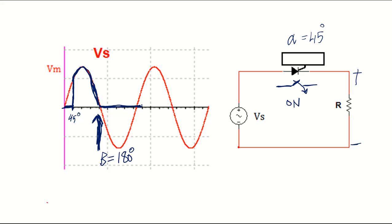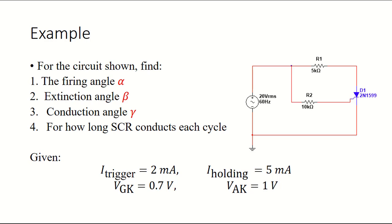We need to apply trigger signal one more time to get the thyristor on again. In this example, alpha is 45, beta is 180, and gamma, the conduction angle is the difference. Let's have a look at the following example.